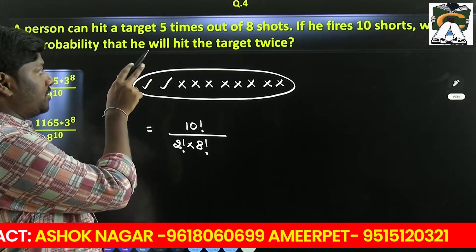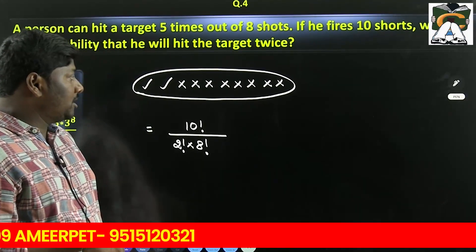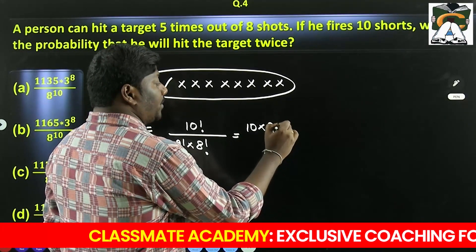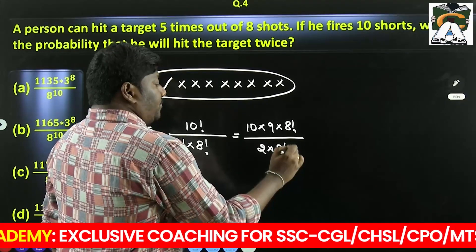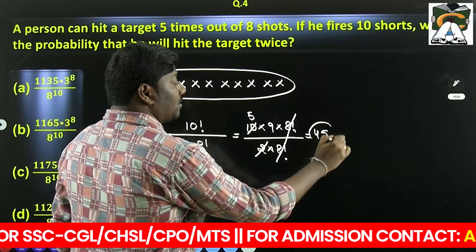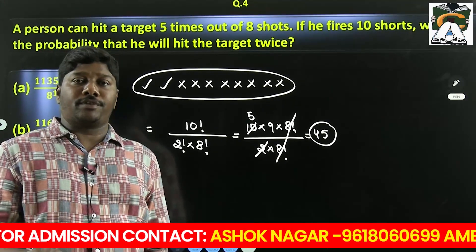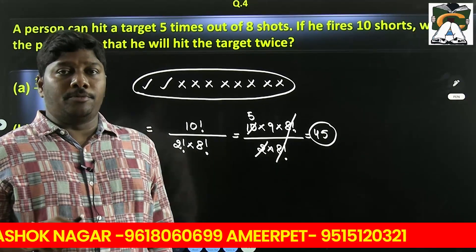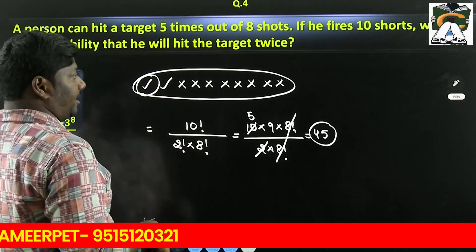10 times shot, 2 hits, 8 unhits. So this is 10 factorial. 10 into 9 into 8 factorial divided by 2 into 8 factorial. 8 cancels, 2 ones are, so 45. 2 times hit the target, 2 times hit the target can be 1st 2nd, 2nd 3rd, 1st 3rd, 1st 4th, 1st 5th, many ways. Total 45 ways. Now let's look at probability. Hitting means 5 out of 8 times. Not hitting means probability of hitting is 5 by 8, probability of not hitting is 3 by 8.